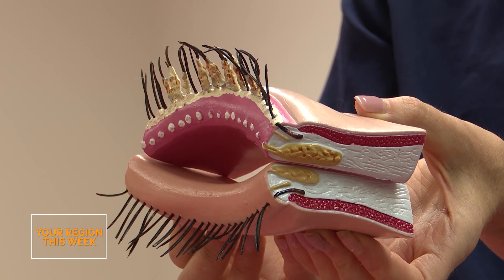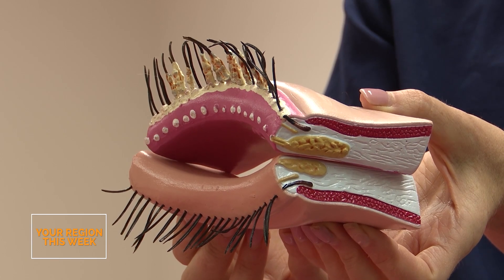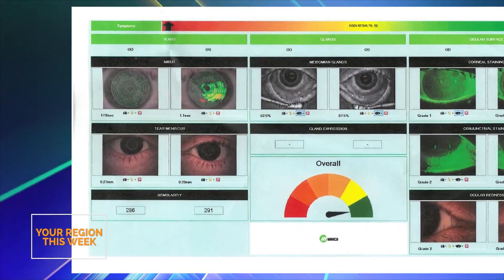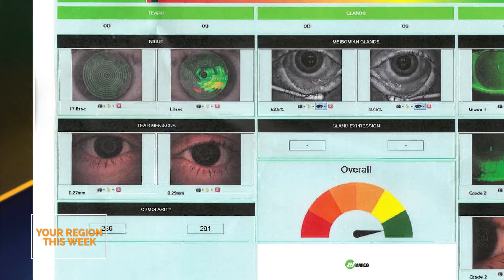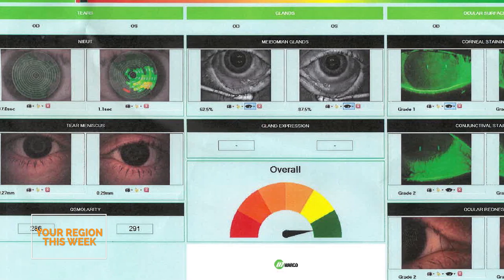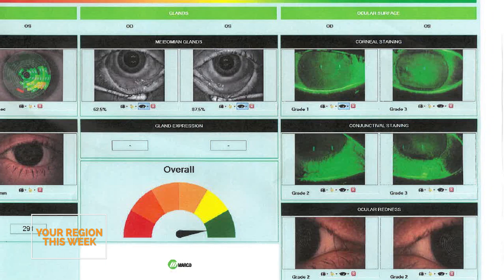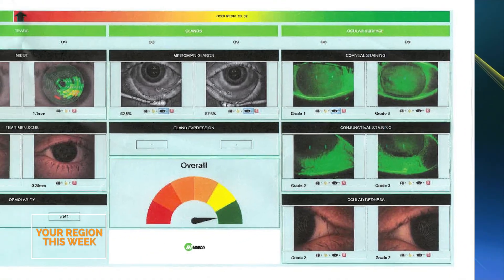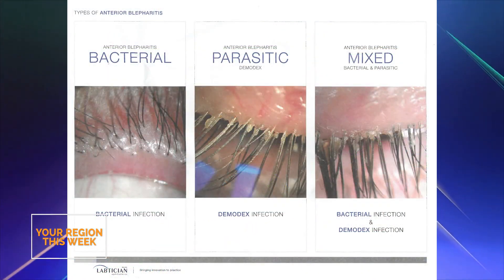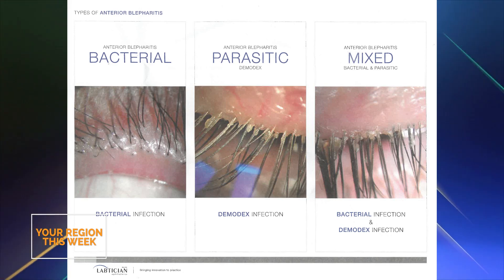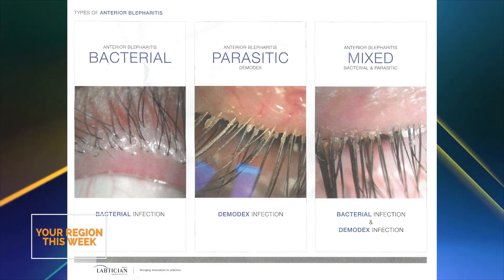Causes of dry eye can include excessive computer use, certain medications, certain activities, certain environments, and a decrease in humidity. In the summer, for example, July being dry eye month, many people experience dry eye because of the air conditioning in their homes. They don't realize that the lack of humidity can exacerbate dry eye symptoms and make people very symptomatic.